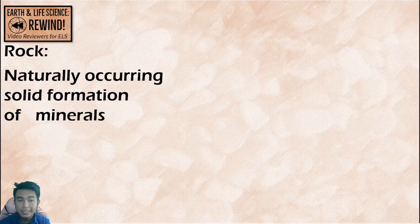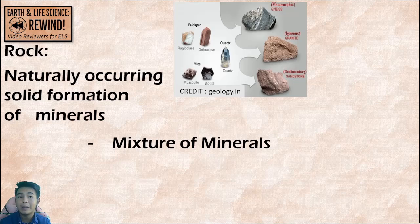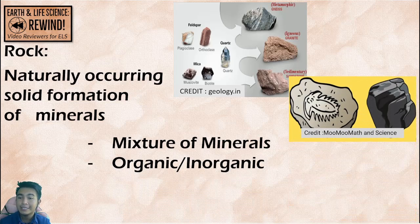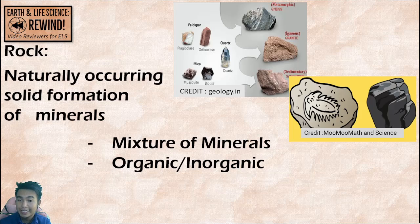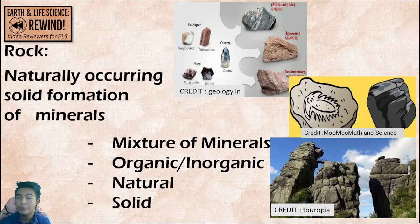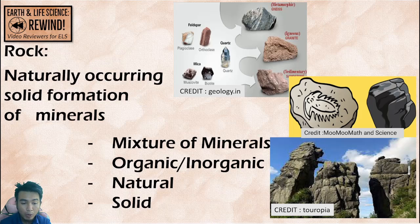Rocks are naturally occurring solid formations of minerals. From that meaning, you can see their characteristics. First, rocks are a mixture of minerals — meaning rocks are made up of two or more minerals. Next, they can be organic or inorganic. Compared to minerals which are only inorganic, rocks can be organic as well, coming from any living organism as long as it's a mixture of minerals, natural and solid. Remember these characteristics from the mnemonic MONS — M-O-N-S.